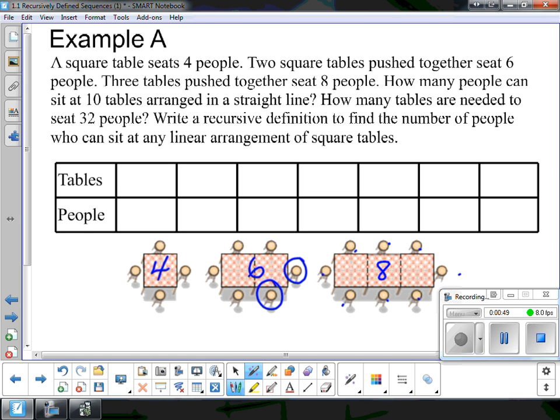So the pattern basically goes like this, one table, four people. Two, six, three, eight. So a couple questions here.